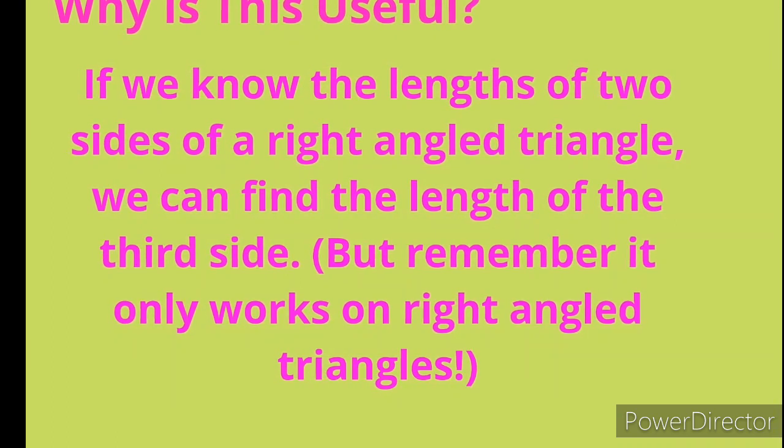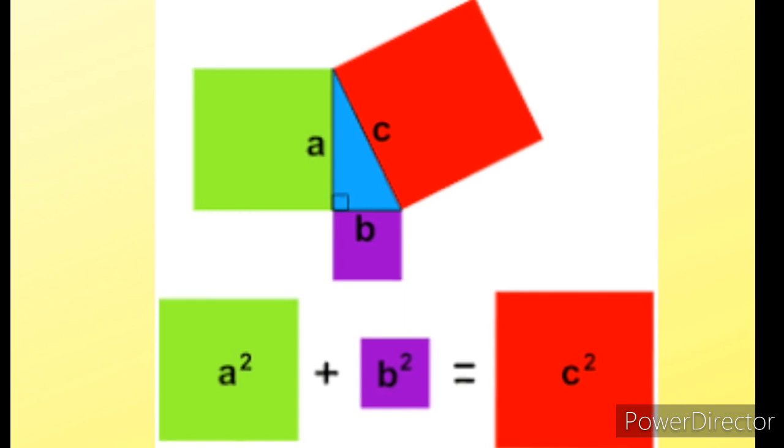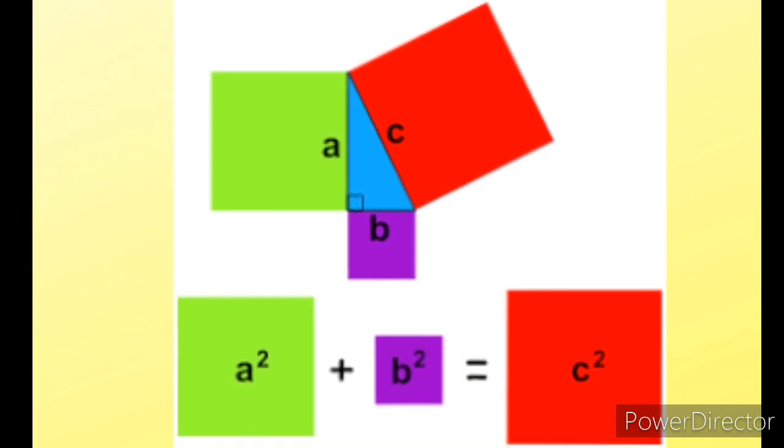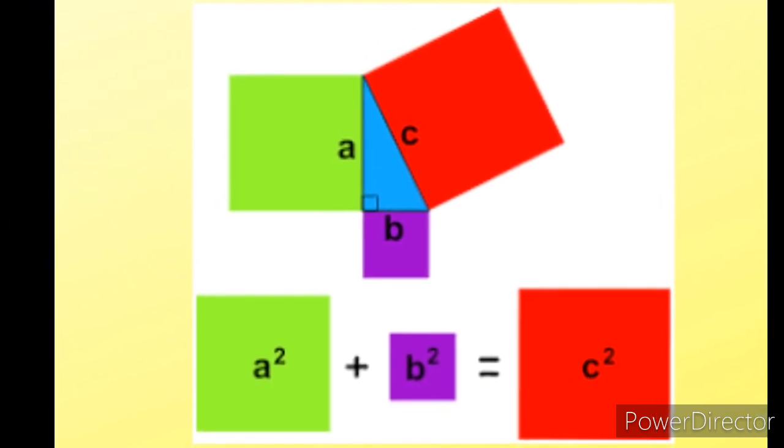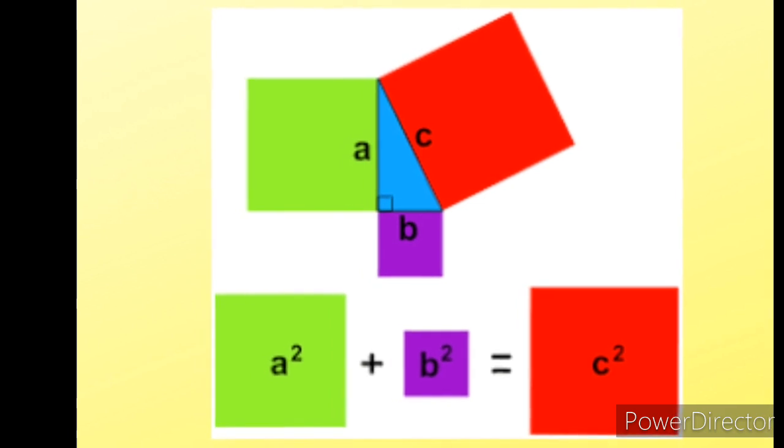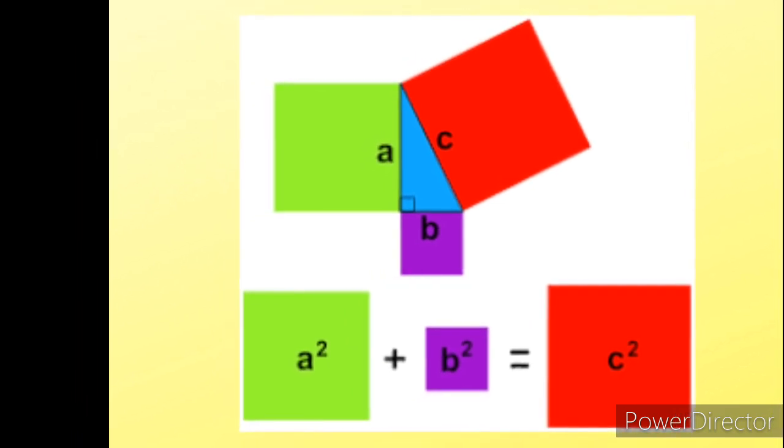We can see in the picture, C is hypotenuse, A and B are the other two sides. A square plus B square is equal to C square.